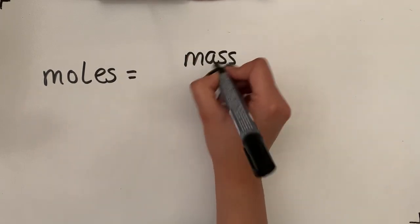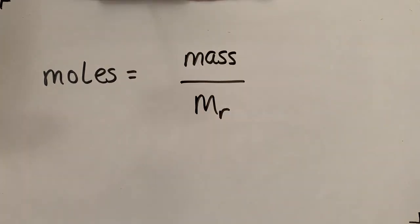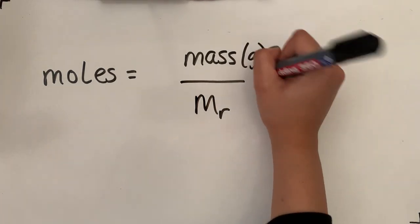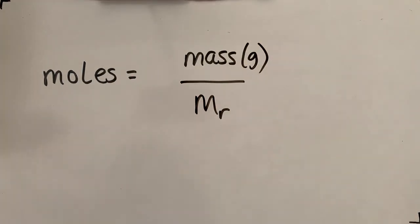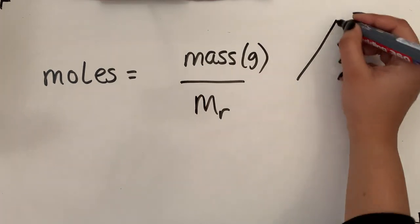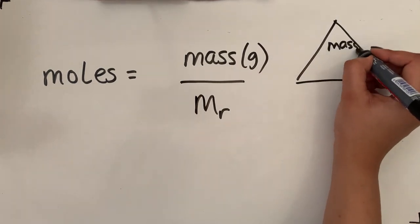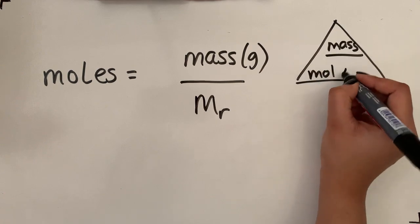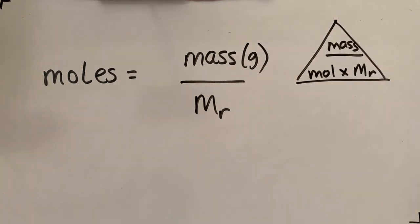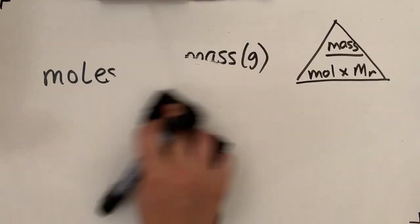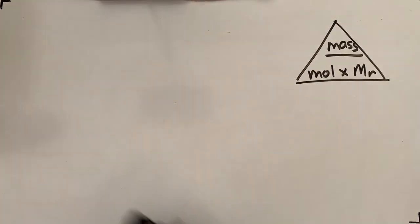Moles equals mass over the molar mass. Mass being in grams, moles the units is just moles, and molar mass is technically without units. I'm also just going to put this into a triangle form, so you've got mass at the top, moles times Mr at the bottom. I'm just going to keep that there when you use that for this exercise.